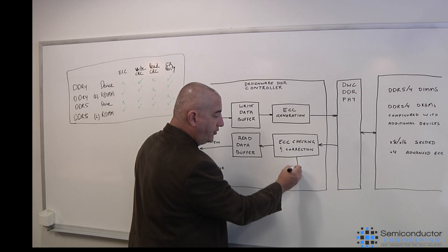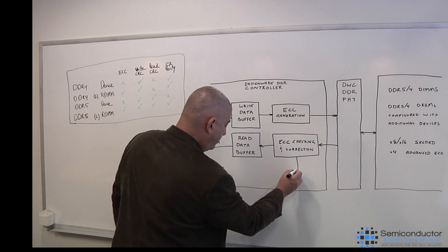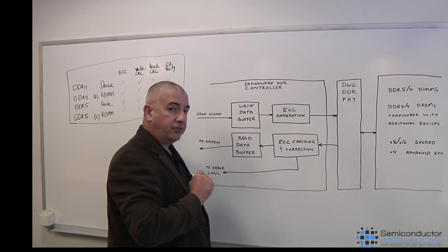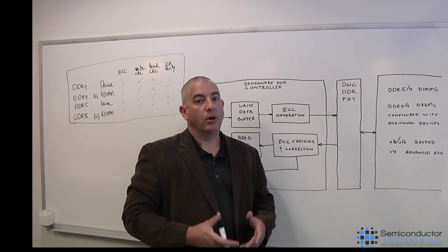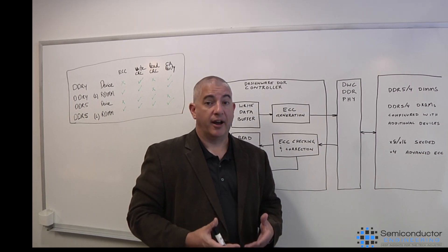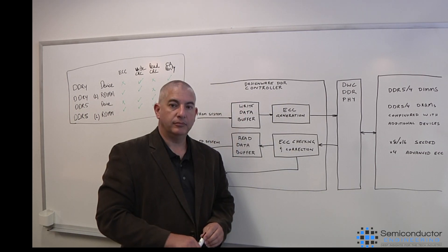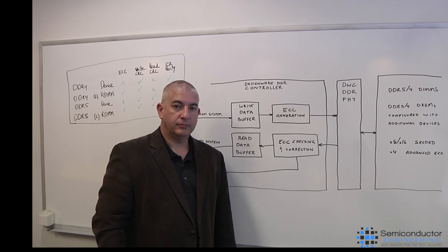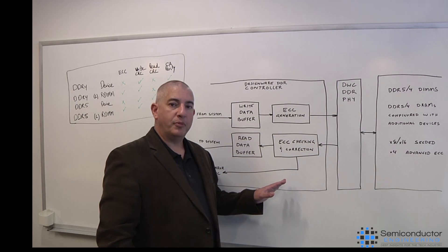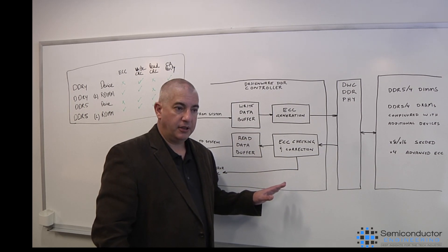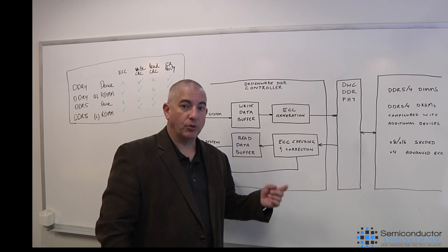This checking block will also see, is there a problem with the data? And if so, it will let the system know. It's going to go to some error logic, and it's going to tell the system, either I had an error with the data and I was able to fix it, or I had an error with the data and I was not able to fix it. And then we have to think about what to do with that. You've got a lot more data than you did in the past. How is that being handled today? In terms of error checking, it's pretty much the same principle we've been using since DDR4. Now, there's some other features that help add a little bit more integrity to the system, and we'll talk about those next.